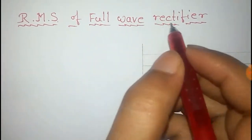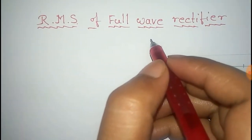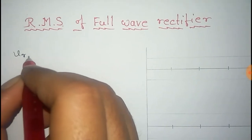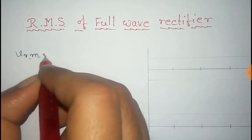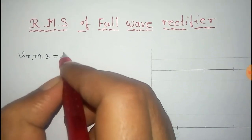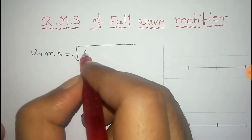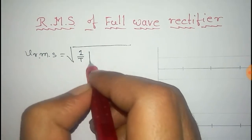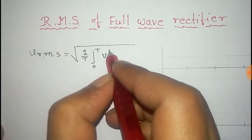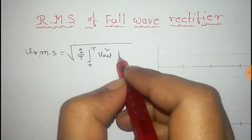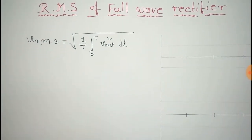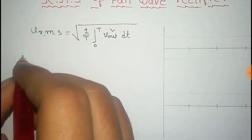In this video we'll find the RMS value of a full-wave rectifier. The formula for RMS value is given by V_rms equals square root of (1/T) with integration limit 0 to T of the output squared into dt.